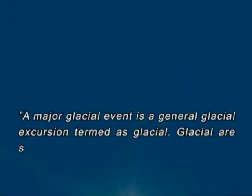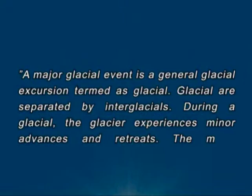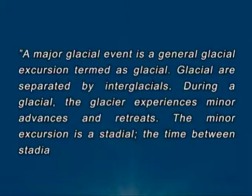Glaciation also consists of phases of advance and retreats: cold stadials and interstadials. A major glacial event is a general glacial excursion, termed a glacial. Glacials are separated by interglacials. During a glacial, the glacier experiences minor advances and retreats. The minor excursion is a stadial, and the time between stadials are interstadials.